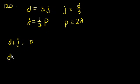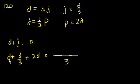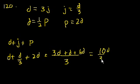So this turns into d plus j, which is d over 3, plus p, which is 2d. Let's find a common denominator, 3. 1d is the same thing as 3d over 3, d over 3, and 2d is the same thing as 6d over 3. That's equal to 3, 4 plus 6 is 10d over 3, or 10 thirds d. And that's choice c.